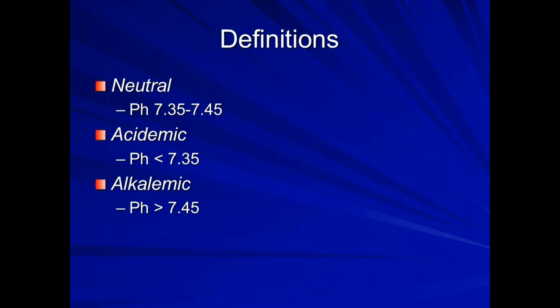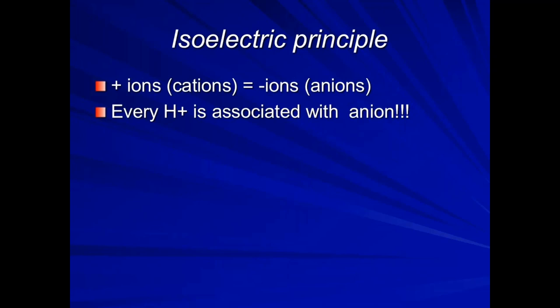If your pH is between 7.35 and 7.45, you are neutral. If you're below 7.35, you are acidemic. If you're above 7.45, you're alkalemic. The '-osis' processes are what get you there — you could be neutral with a metabolic alkalosis and a metabolic acidosis. The '-osis' are the processes; the '-emia' are your end result. That's going to be very important when we talk about mixed disturbances. The isoelectric principle: positive equals negative, very important when we discuss the anion gap.